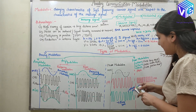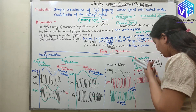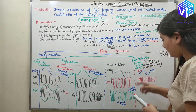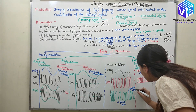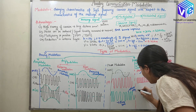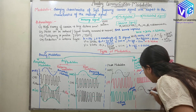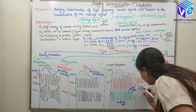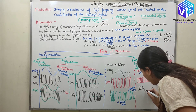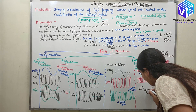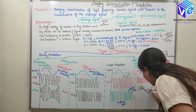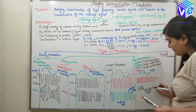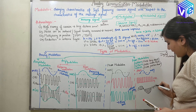Now if again I take the same message signal m(t), and if I have to do pulse amplitude modulation, I will use the amplitude of the signal and change the amplitude of the pulse accordingly. Here the amplitude was 0, so I am not having any pulse on that side. Now this is pulse amplitude modulation — the amplitude of the pulse changes with respect to the message signal. This is my M'(t).